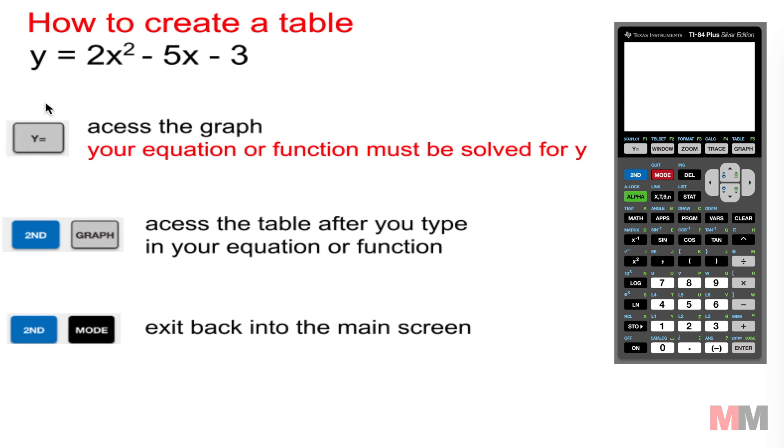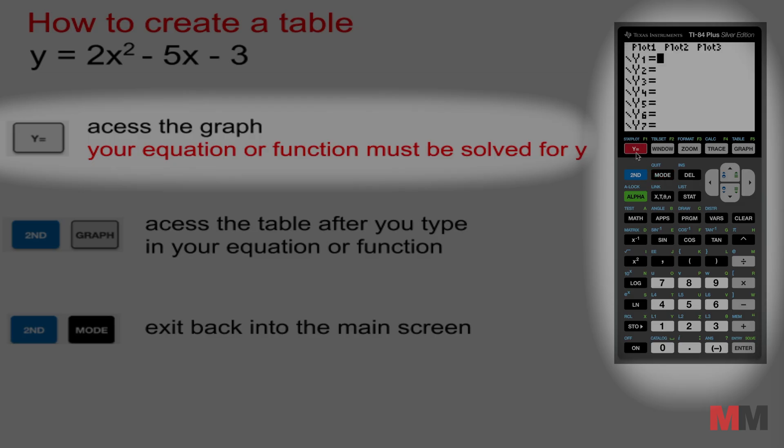First thing you want to do is have an equation and make sure that equation is solved for Y. So let's just use this quadratic one right here: Y equals 2x squared minus 5x minus 3. First thing you type in Y equals, which is the button right here, and you're not going to type in Y because the Y is already there. You're just going to type in the rest: 2x squared minus 5x minus 3. So that first step is super easy, you just plug those in.